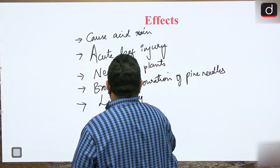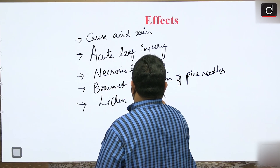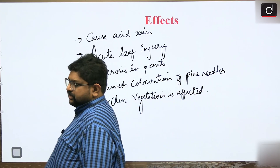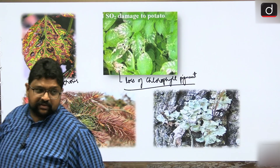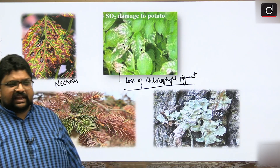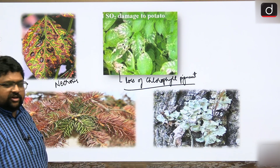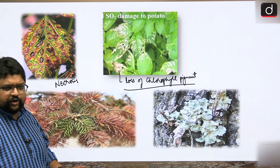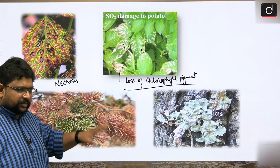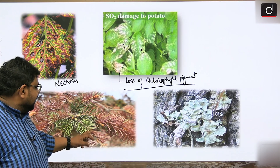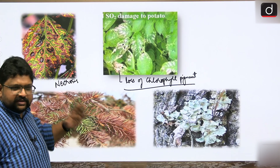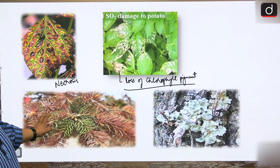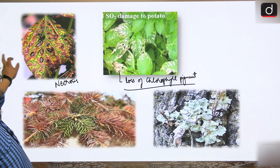Lichen vegetation is also affected by SO₂. Lichen is a symbiotic association of fungi and algae, typically found on rocks and soil. Its population decreases with excess SO₂. Pine needles - from Pinus roxburghii, the Christmas tree - turn completely brown in color, which is also an indication of excess sulphur dioxide.